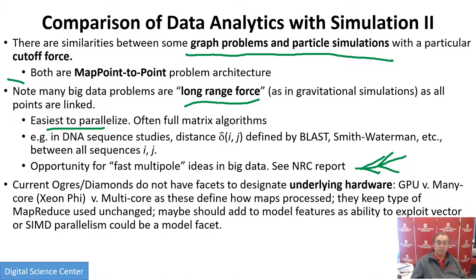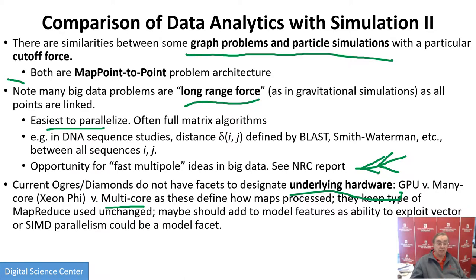When looking at big data versus simulations, we need to look at the underlying hardware, because GPUs, many-core chips like Xeon Phi and Knight's Landing, or classic multicores and classic Xeon, tell you how the maps are processed. How you map things to processes is not necessarily fixed, and we need to study that more in the characterization.